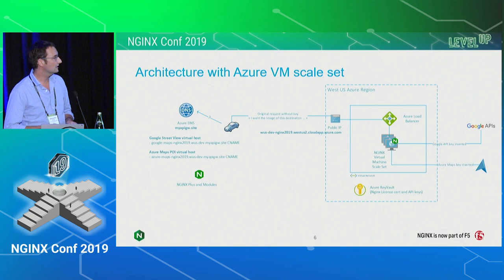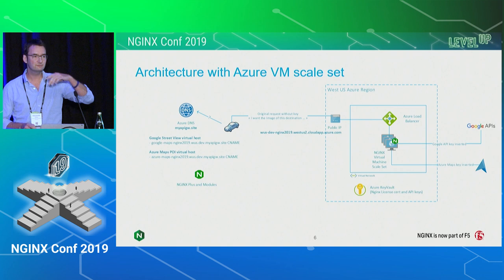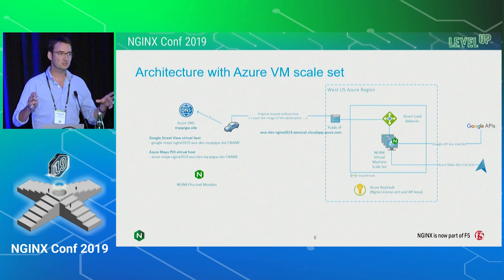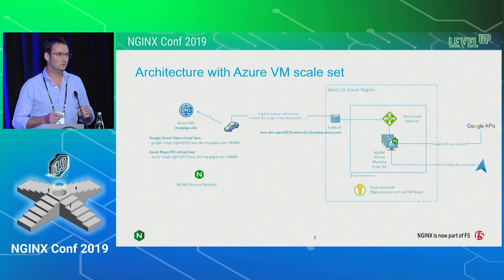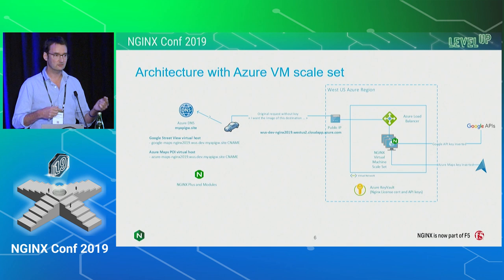Do people in the room use VMSS and scale sets in Azure? You take one image or distribution, deploy one up to 1,000 virtual machines managed as one cluster — one package. Azure handles all the NAT rules and load balancing. If you remove a node, it manages the load balancer and handles the translation if you need to connect into each node. This is the advantage of the scale set.